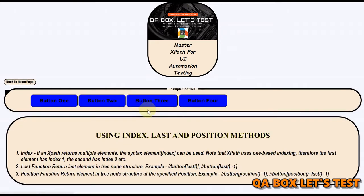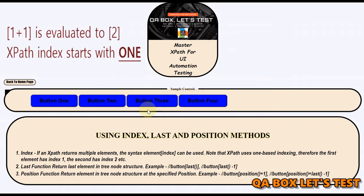If an XPath expression returns multiple elements, we have to use index in the syntax. The element goes in square brackets, and inside that you provide the index value. You can pass in values like 1, 2, 3, or you can also do 1 plus 1, which means that anything you write inside these square brackets is an expression and would be evaluated.